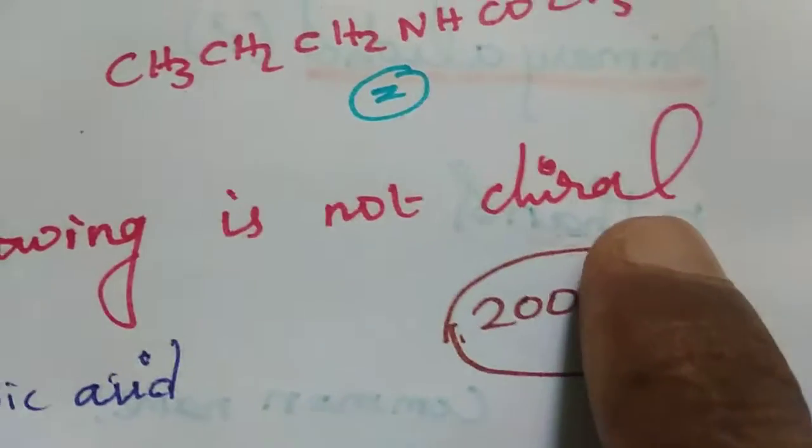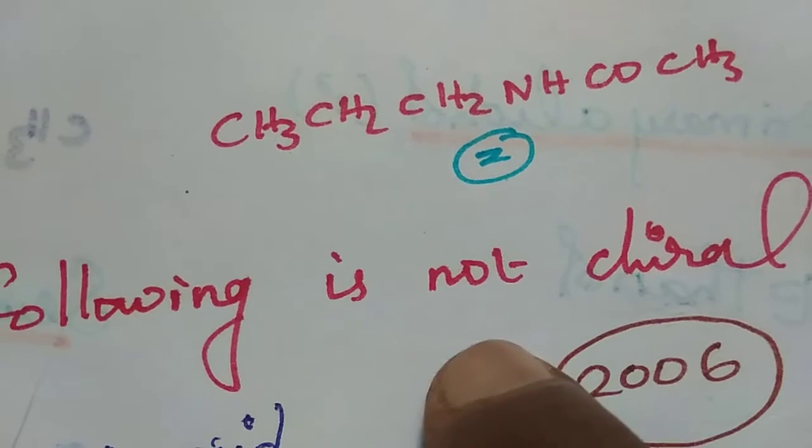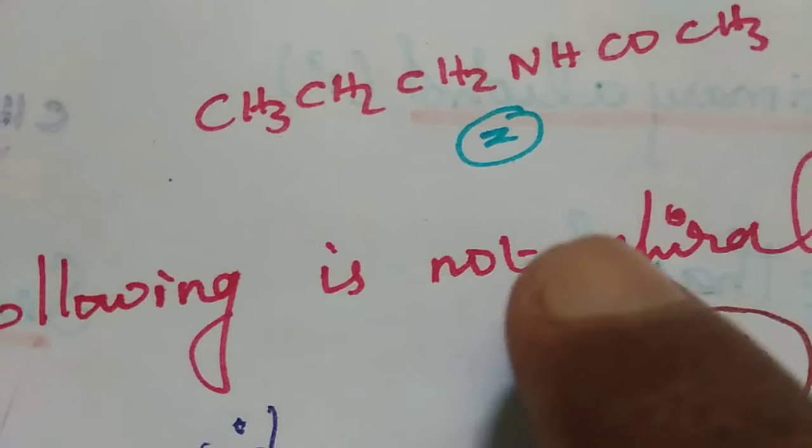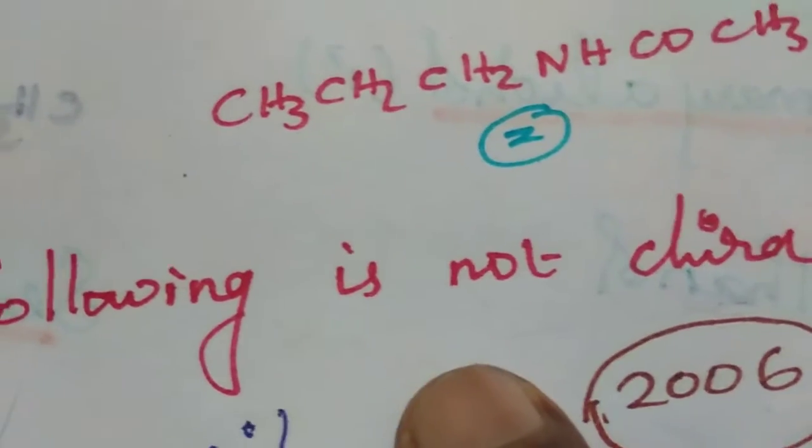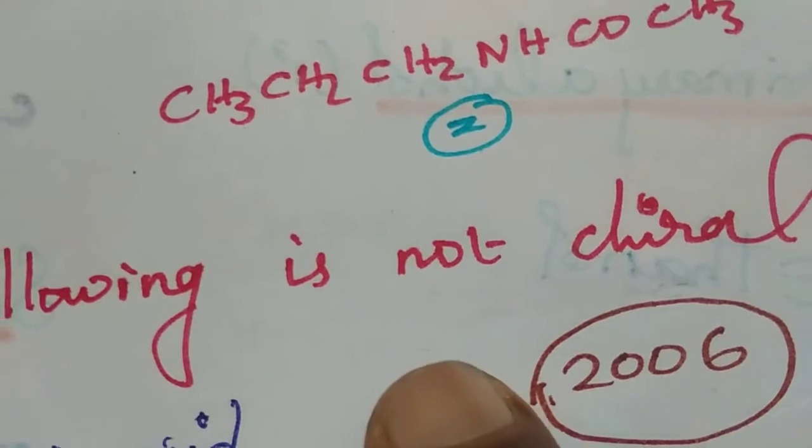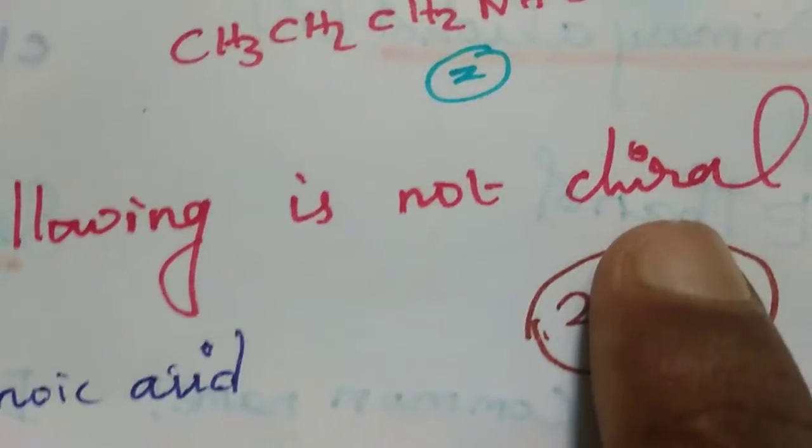Next one is, which of the following is not chiral compound? We know that carbon valence is four. What do you mean chiral? A carbon is attached with four different groups, is also called as chiral carbon or asymmetric carbon. Here four options are given.